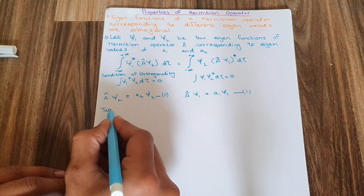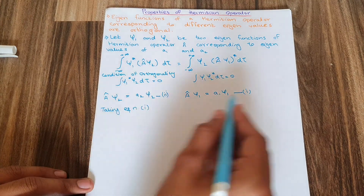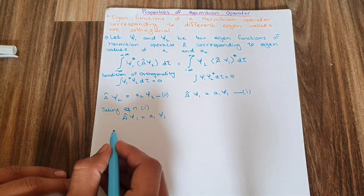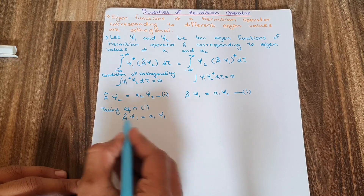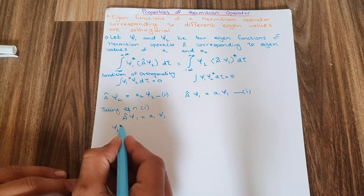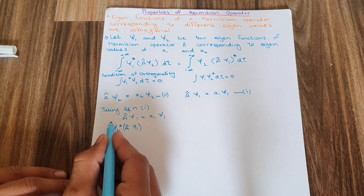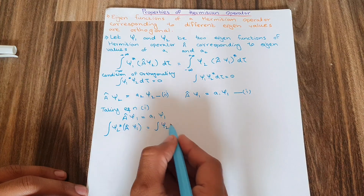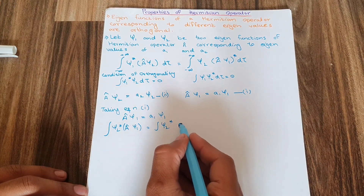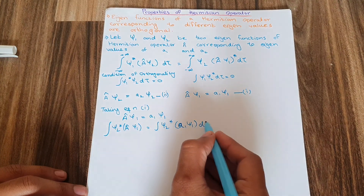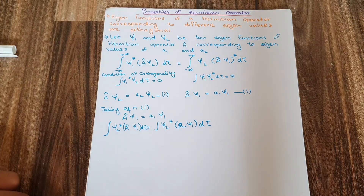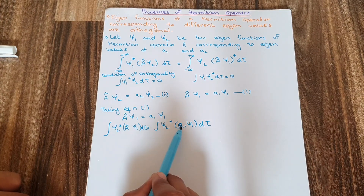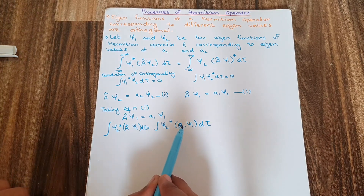Taking equation number one — operator A on ψ₁ gives a₁ψ₁ — we multiply this equation by ψ₂* and integrate. So on the left hand side we have the integral of ψ₂* (A ψ₁) dτ, and on the right hand side we have the integral of ψ₂* a₁ ψ₁ dτ.